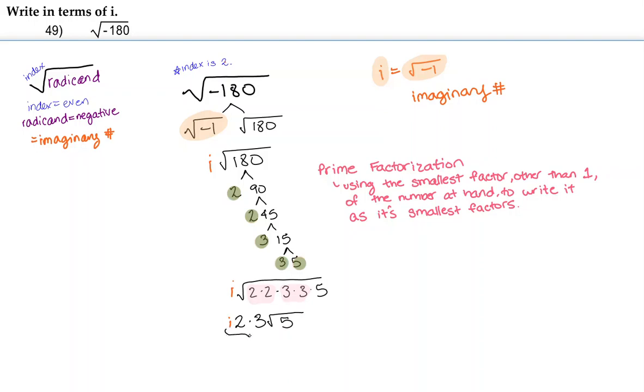Now we're going to multiply the i times the 2 times the 3, giving us 6i. And then we're going to bring down our square root of 5. So our final answer is going to be 6i square root of 5.